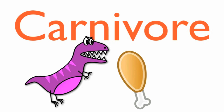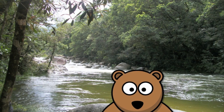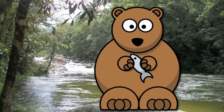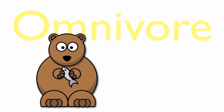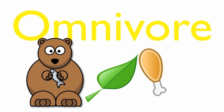The final type of consumer lives in the woods. A bear eats fish from a river and berries from the bushes. A bear is a consumer known as an omnivore. An omnivore is an animal that eats both plants and animals for food.